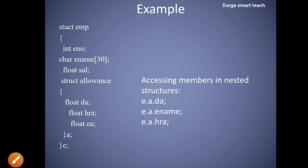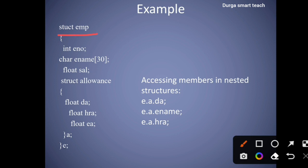Here the example uses 'struct emp'. So emp is one structure, used to store different data types of elements in a continuous memory location — whereas an array is used to store similar data items in a continuous memory location. Here struct emp contains employee number (integer), ename (character data type), and salary (float data type), so this structure stores different data types of elements.